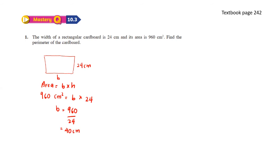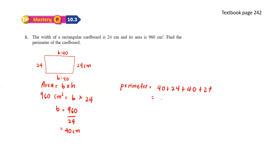Since it's a rectangle, the opposite sides are also 40 cm and 24 cm. Now that we know all sides, the perimeter equals 40 plus 24 plus 40 plus 24, and that gives us an answer of 128 cm.